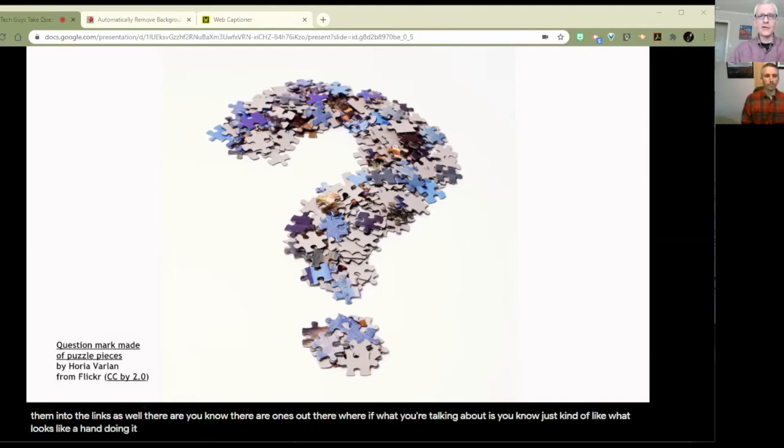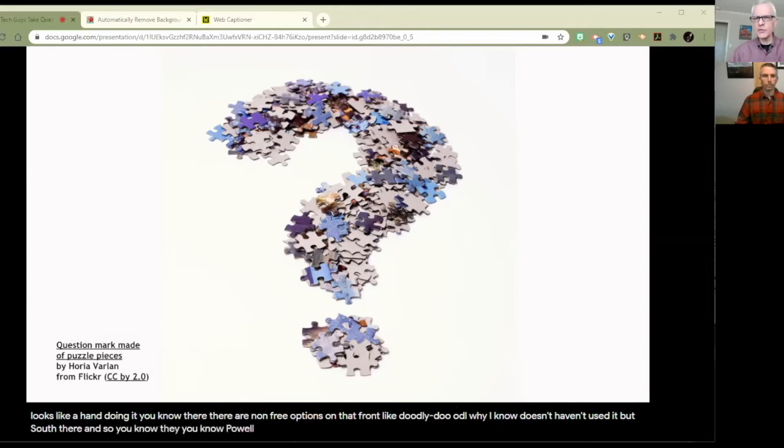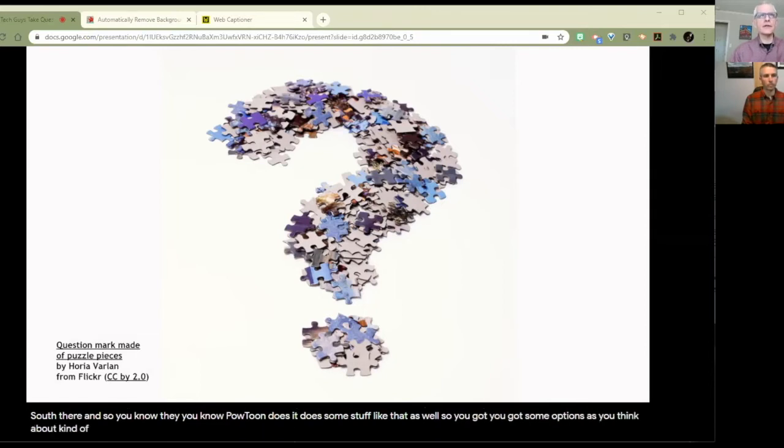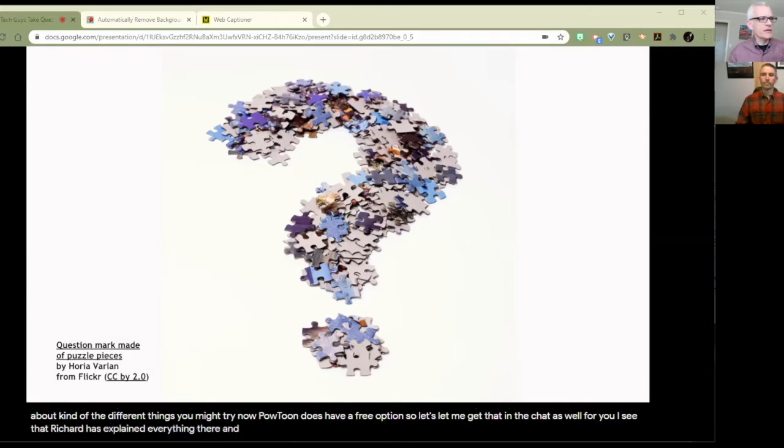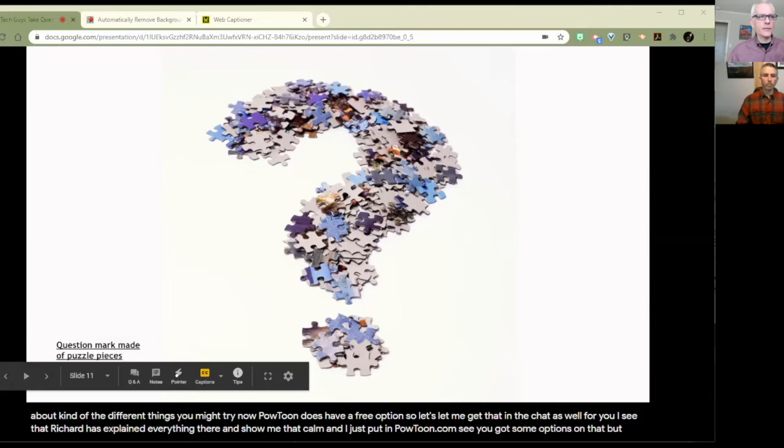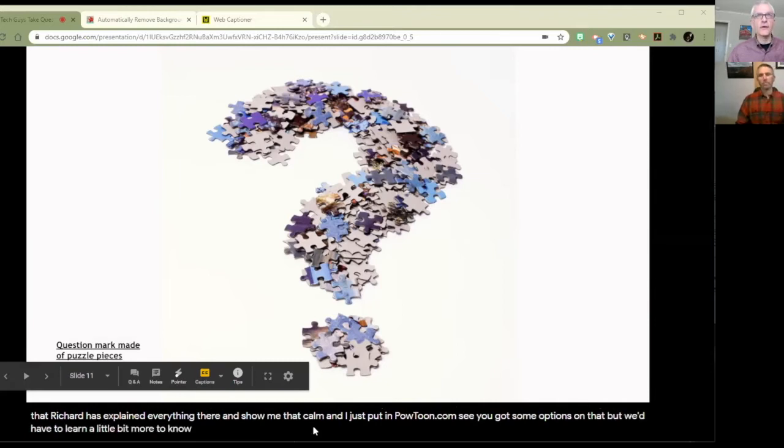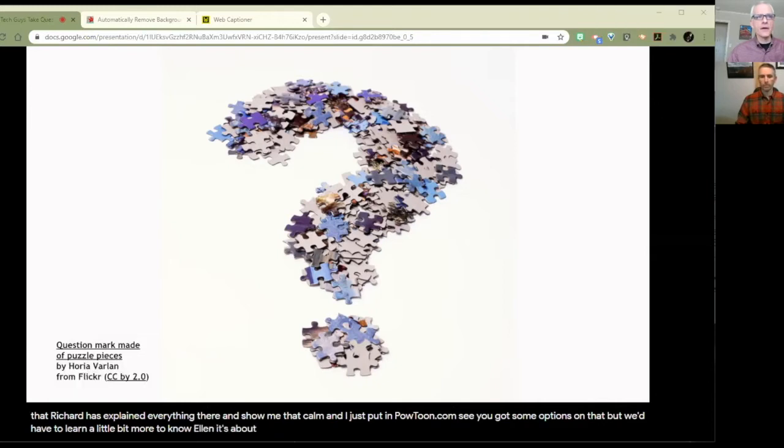In fact, Seesaw.me, the web version of Seesaw, you can do that right in your web browser as well. So that's one way to go about it. If you want to animate it, then you've got some other options, like using some of the cool tools that are available in iMovie, or you can use something like Cloud Stop Motion. There are ones out there where if what you're talking about is just kind of like what looks like a hand doing it, there are non-free options on that front, like Doodly. I haven't used it, but it's out there.